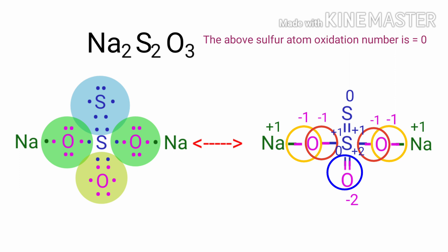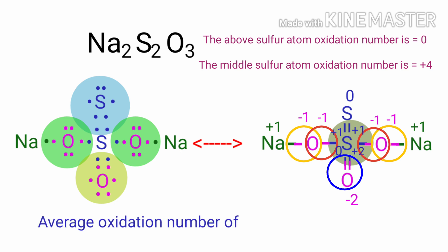Therefore, the above sulfur atom has zero oxidation number, and the middle sulfur atom has plus four oxidation number, because plus one plus two plus one plus zero equals plus four. The three oxygen atoms have minus two oxidation number and the two sodium atoms have plus one oxidation number. Therefore, the average oxidation number of sulfur is zero plus four divided by two, which equals plus two.